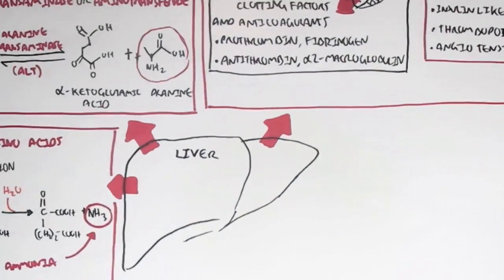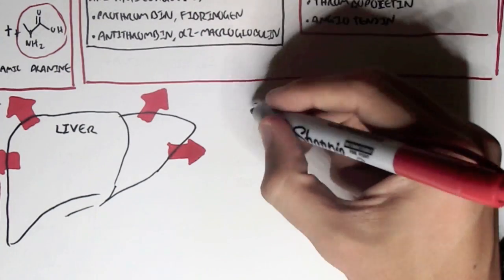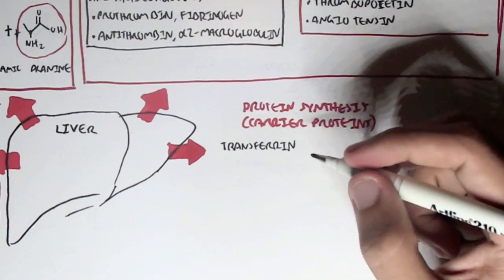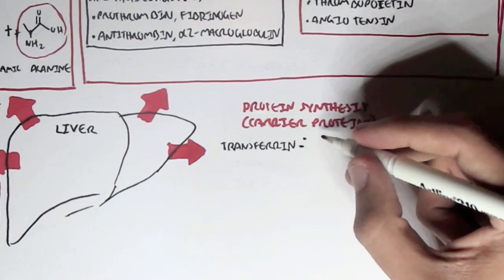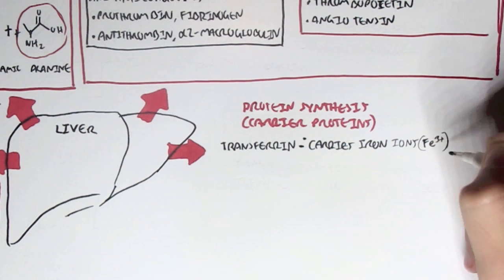The liver also synthesizes plasma proteins or carrier proteins that help carry substances or molecules from A to B, such as from the liver to the kidney or from the liver to the muscle. An example of carrier proteins is transferrin. Transferrin carries iron ions in the ferric acid forms, Fe3+. So transferrin carries iron ions around the body.